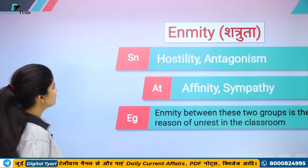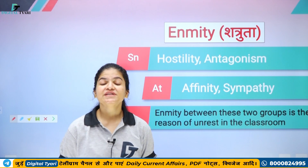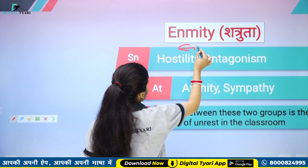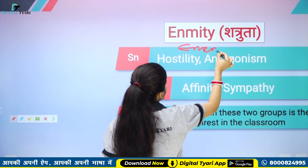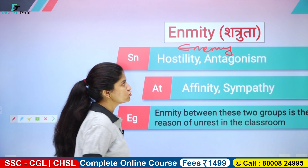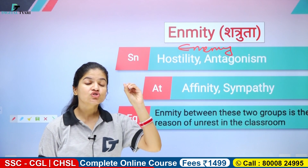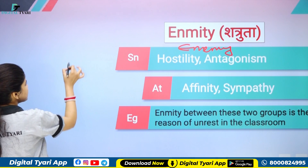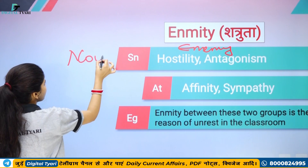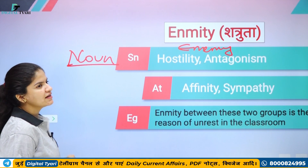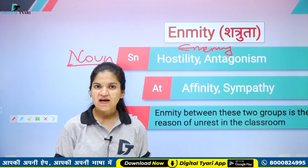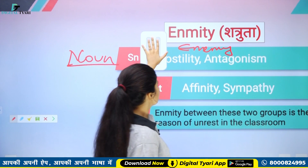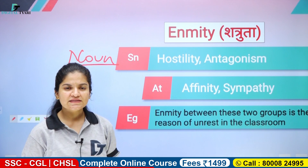Next word easy hai — ENMITY. Enmity ka matlab hota hai — shatrutha. Ye word kis se bana hai? Enemy se. Enemy toh suna hoga aap logon ne — enemy matlab hota hai shatru, dushman. Aur enmity matlab hota hai dushmani. Toh enmity kya ho gaya? Ek noun ho gaya — shatrutha, koi quality bata raha hai.